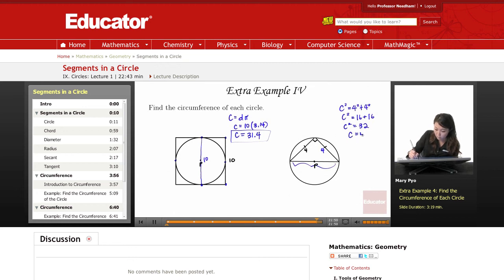And instead of labeling that C, I should label that as D because it's the hypotenuse but it's also the diameter. So the circumference is going to be pi times D.